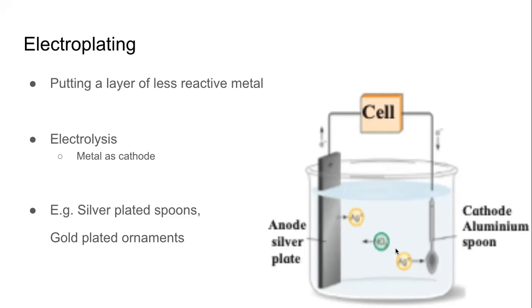Remember the difference between anodization and electroplating: in anodization, the metal is connected to the anode; in electroplating, the metal being protected is connected to the cathode. That is the main difference.